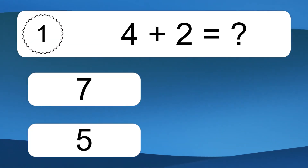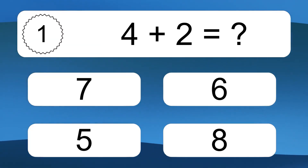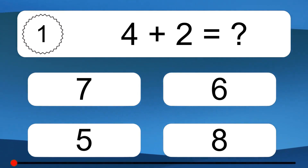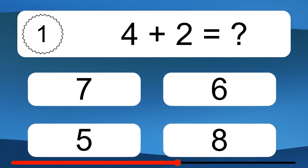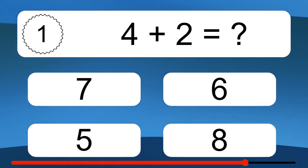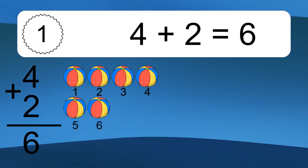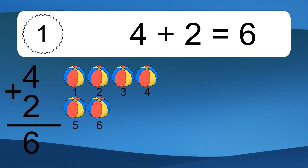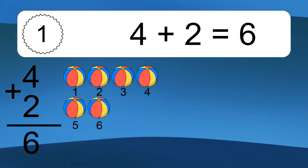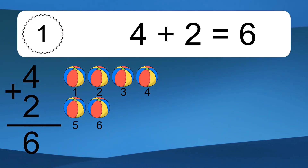4 plus 2 equals what? 4 plus 2 equals 6. Let's count it. 1, 2, 3, 4, 5, 6.